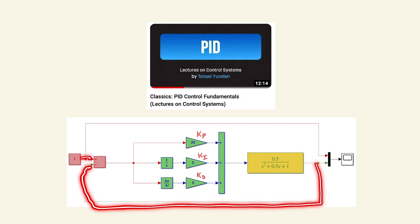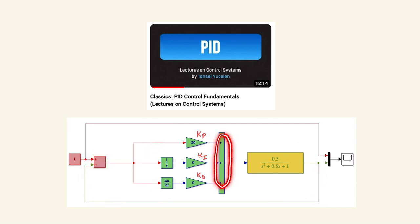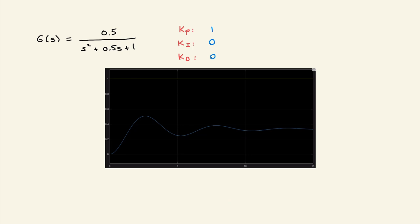Comparing with the reference or the command, constructing this error signal, this error signal goes to PID control parameters and then summing these control actions up. Here is the control signal sent to this plant. In the first example I am going to assume we have this second order open loop stable system.